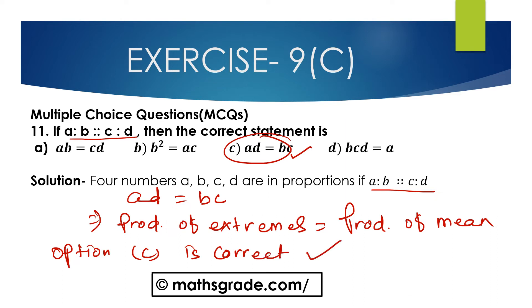The correct option is Option C: AD equal to BC. Product of extremes is equal to product of means.